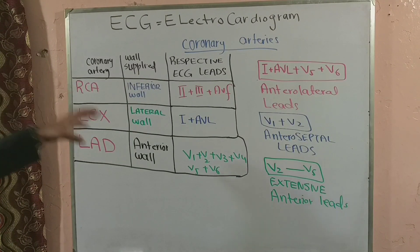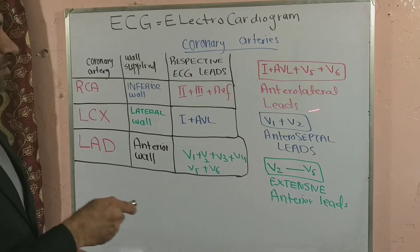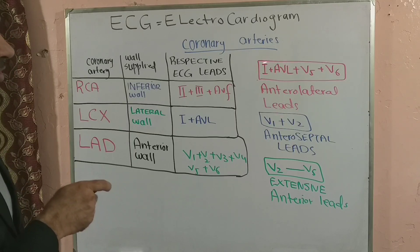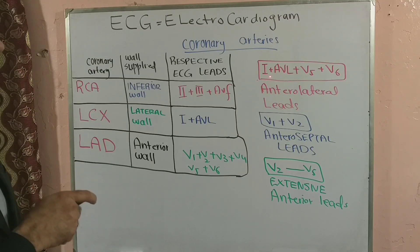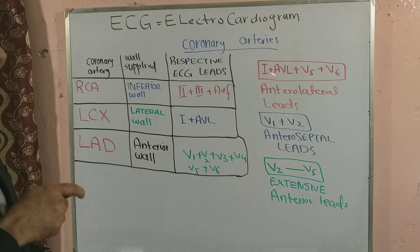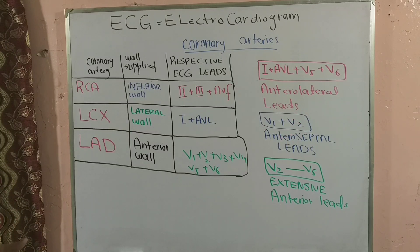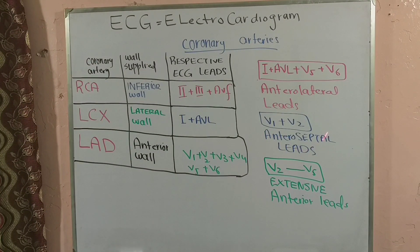Breaking it down further: leads I, aVL, V5, and V6 are the anterolateral leads. Leads I and aVL are purely looking at the lateral wall, while V5 and V6 look at the part of the anterior wall on the lateral side. So a change in I, aVL, V5, and V6 indicates a change in the anterolateral part of the myocardium. Leads V1 and V2 are located in front of the anterior wall but more towards the septum — they are rightly called anteroseptal leads, as changes in the septum and the nearby anterior wall are evident in V1 and V2.